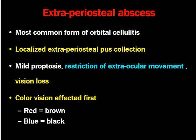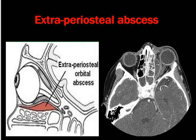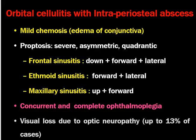Next is extaperiosteal abscess, where the infection has spread from the paranasal sinuses into the extaperiosteal area. It is the most common form of orbital cellulitis. There will be a localized extaperiosteal pus collection, mild proptosis, restriction of extraocular movement, and visual acuity loss. Color vision is affected first, with red and blue color-blindness. On imaging, the abscess is present in the extaperiosteal area with minimal pressure on the soft tissues and the optic nerve.